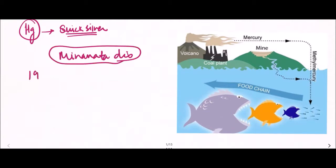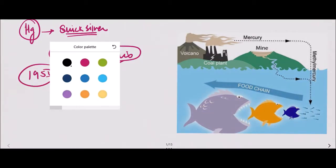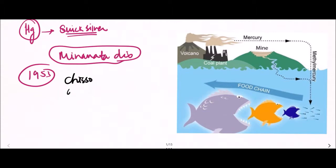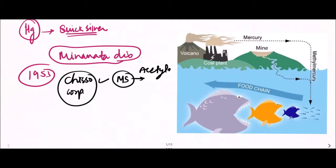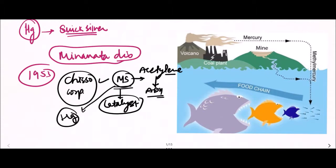In 1953, there was a corporation named Chisso Corporation — a chemical plant. They were using mercuric sulfate as a catalyst for the conversion of acetylene into acetaldehyde. During this process, there was a leakage of mercury, mostly in the form of methyl mercury.